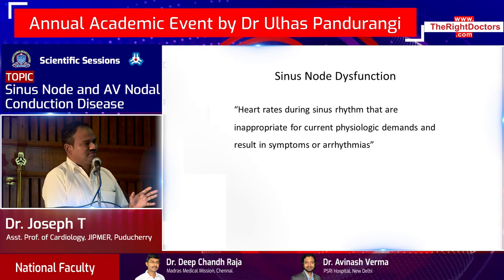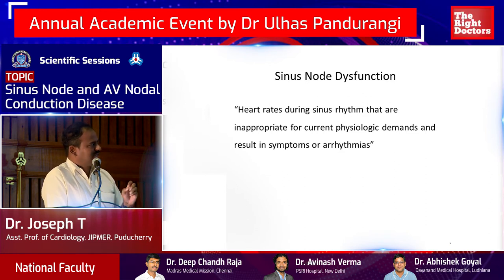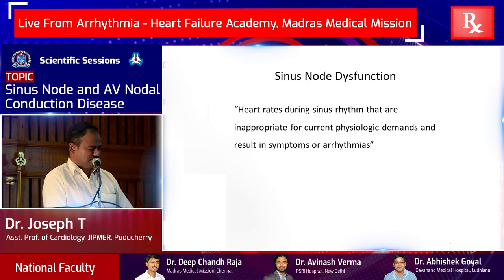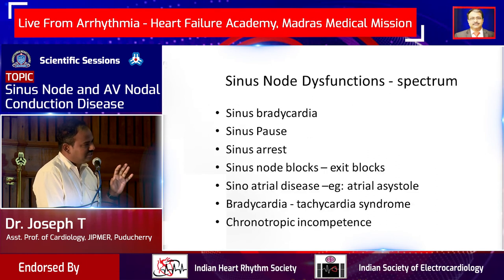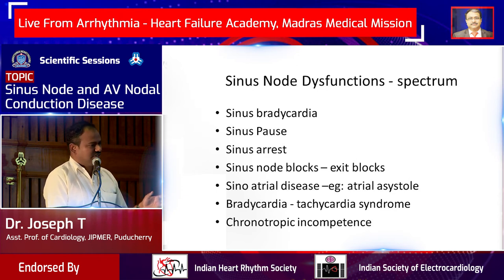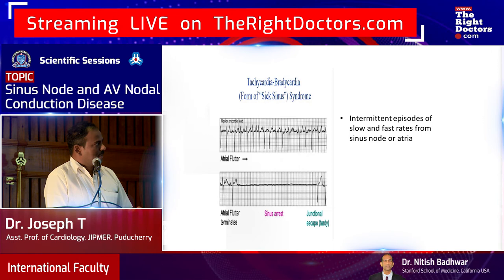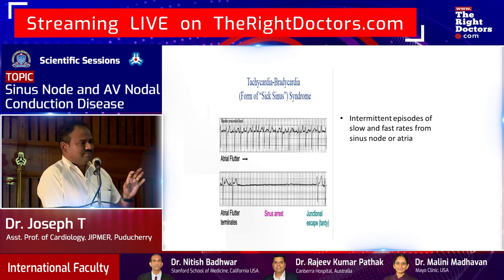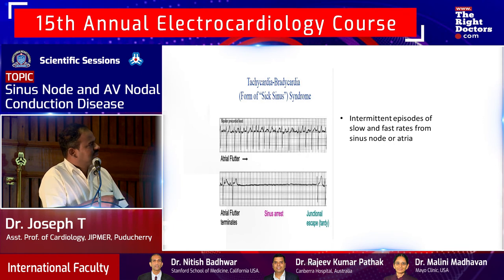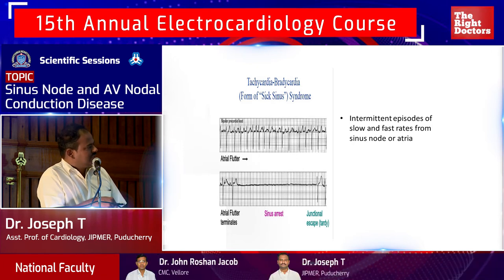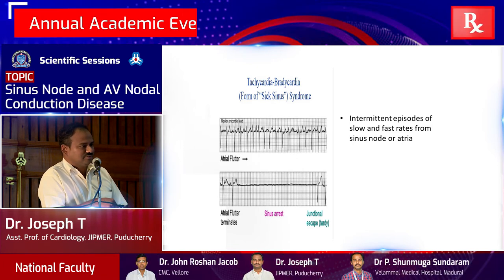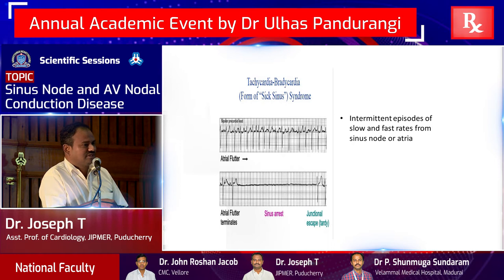Sinus node dysfunction is broadly defined as heart rates inappropriate for physiological demands resulting in symptoms or arrhythmia. It can be sinus bradycardia, exit block, sinus pause, arrest, bradycardia-tachycardia syndrome, or chronotropic incompetence. An example of tachybrady syndrome shows an atrial flutter with variable conduction followed by a sinus arrest and then junctional escape — this is classical tachybrady syndrome in sinus node dysfunction.